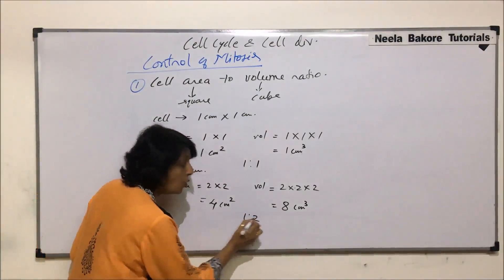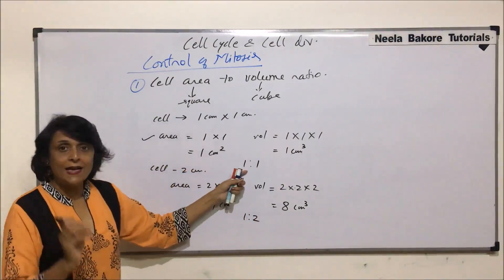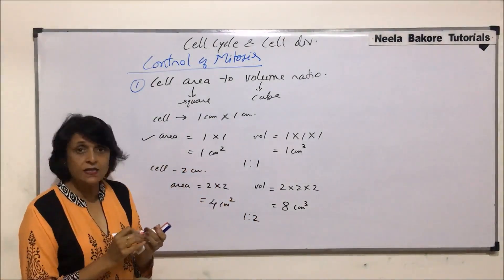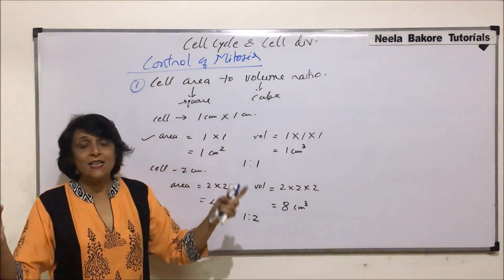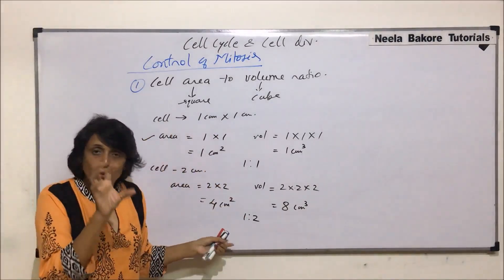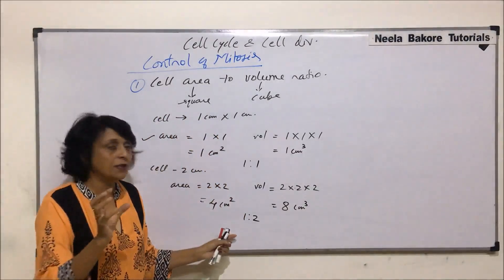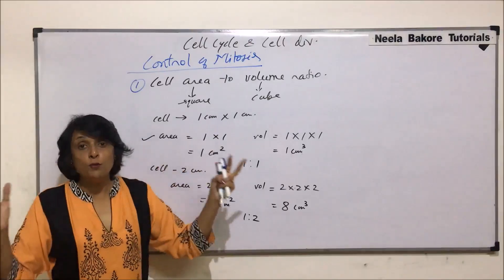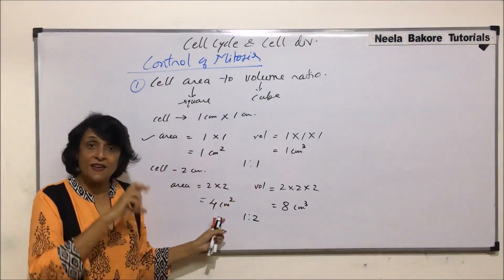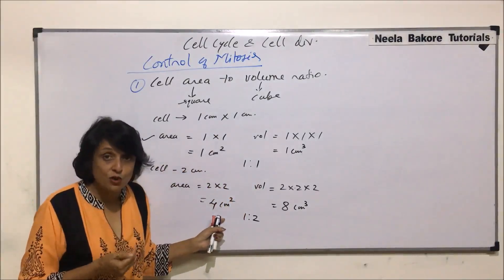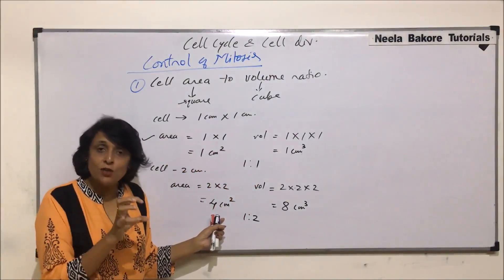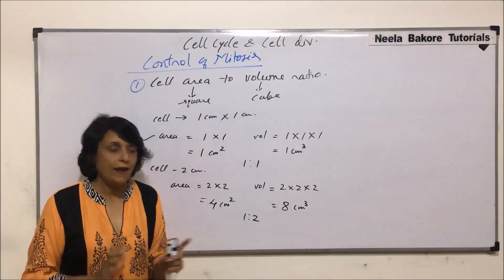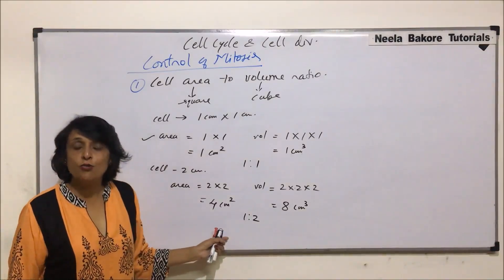Now it has become 1 is to 2. So as the cell size goes on increasing, that means the outer part has become bigger and the volume or the surface area is changing but the volume is not able to support. Or if the volume is increasing and the surface area is not increasing in the same respect, then that much of cytoplasmic content will not be able to support the cell. So whenever these kind of ratios change, this triggers cell division.